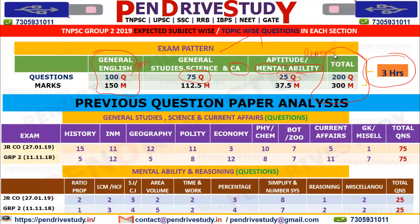When you look at General Studies, General Science, and Current Affairs, by going through previous questions plus fundamentals, around 50 questions are easy to handle. Getting 95% correct is possible. Then from Mental Ability — 25 questions — scoring around 23. The total target level is: 95 from General English or Tamil, 50 from General Studies, General Science, and Current Affairs, plus Aptitude: 23. That gives approximately 168.